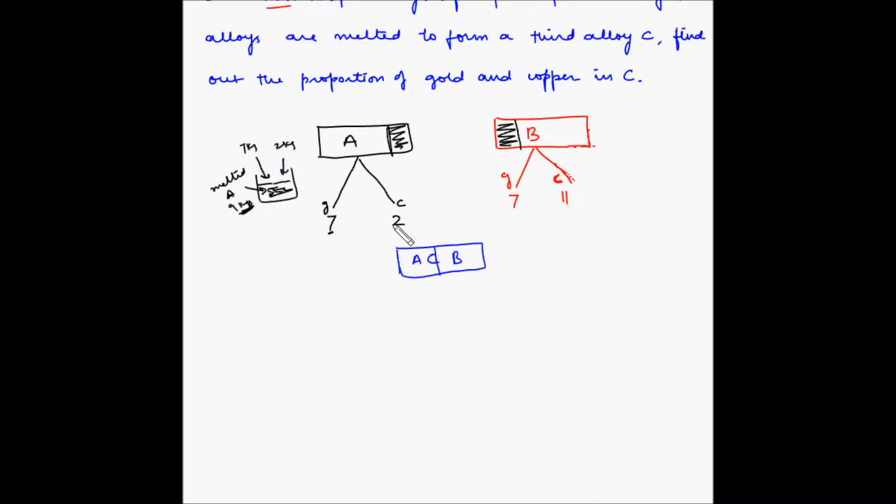As we have discussed, in this portion of A, we will have 7 out of total 9 parts of gold and 2 out of 9 parts of copper. And in this portion of B, we will have 7 out of 18 parts of gold and 11 out of 18 parts is copper.